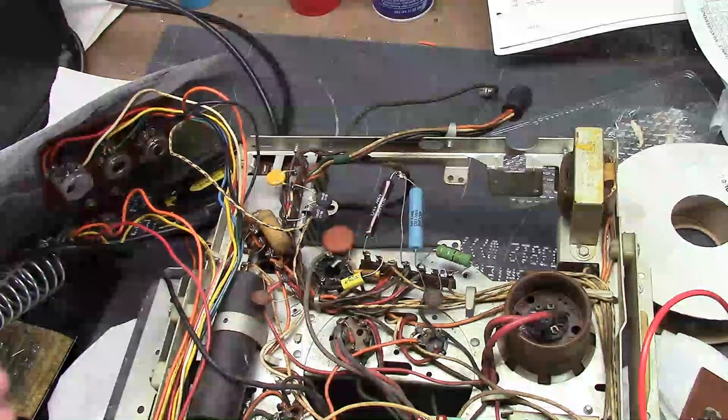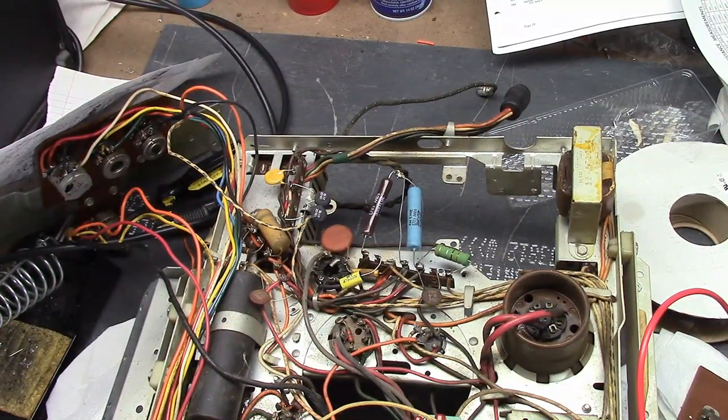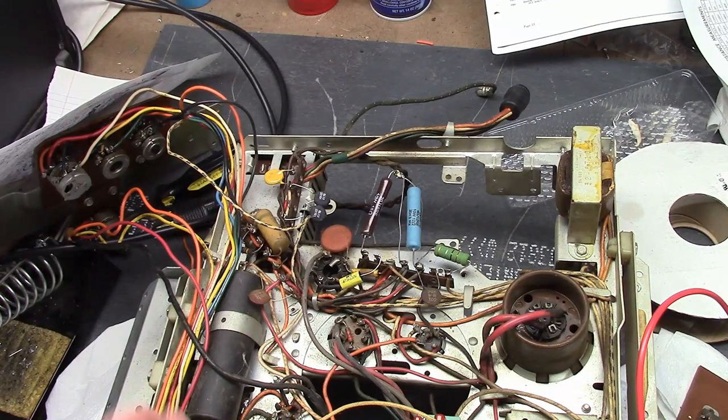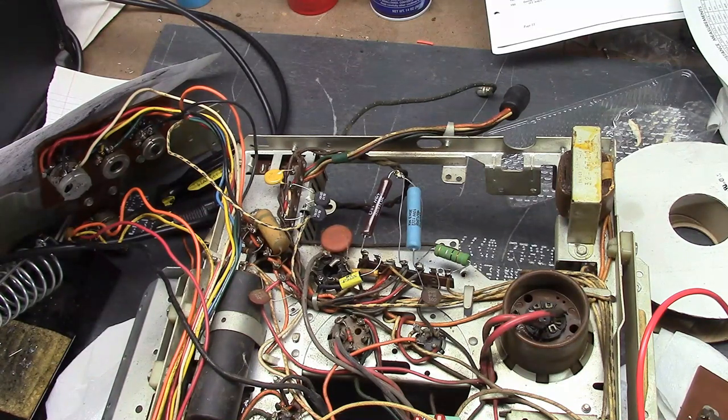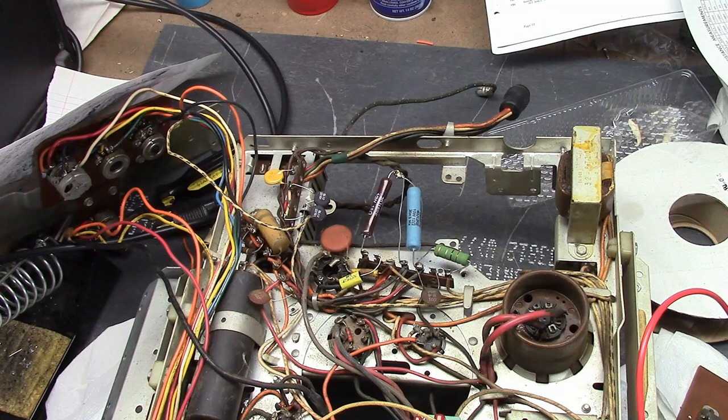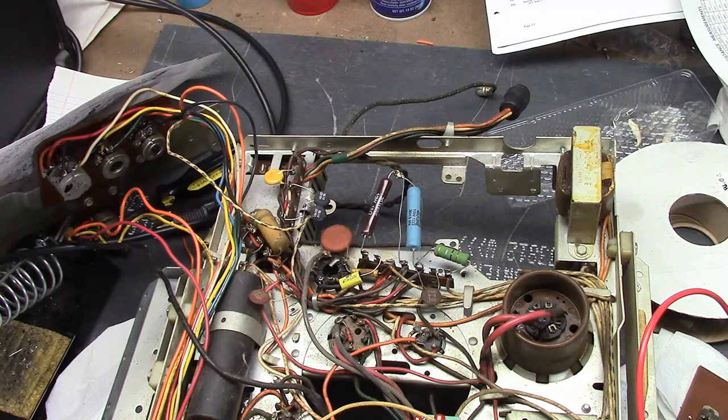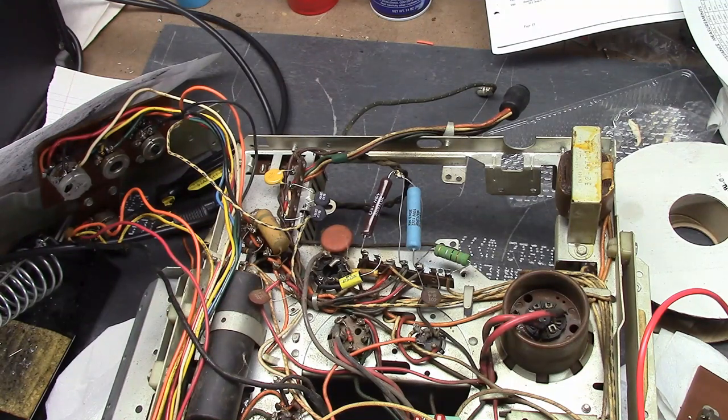All right, now I'm talking about the series strung sets, where all the tube filaments are wired together in series, there's no power transformer. The parts I'm talking about are part of that filament string, and this is found in the 9L37 chassis used in the Holiday and Pedestal models, and the 9L38 used in the Tandem model.